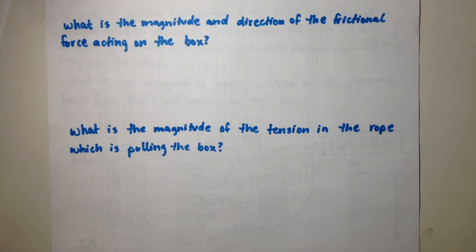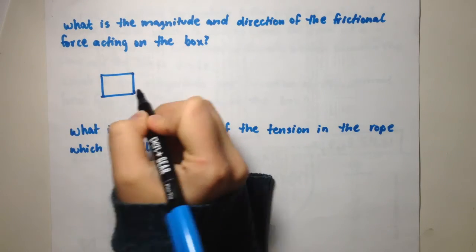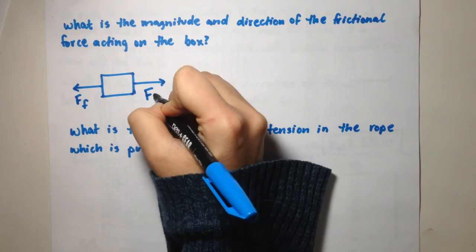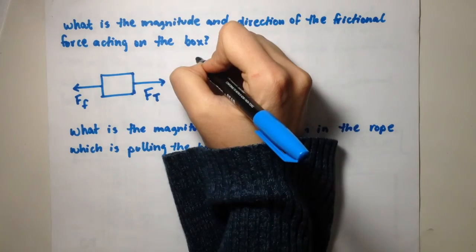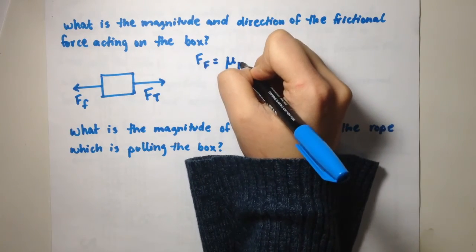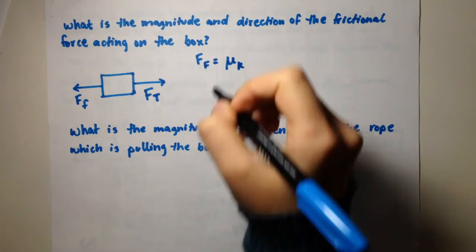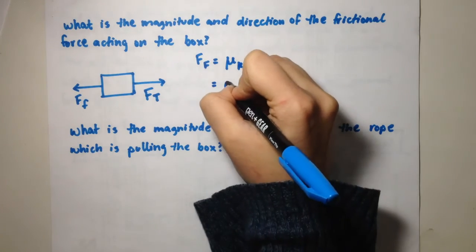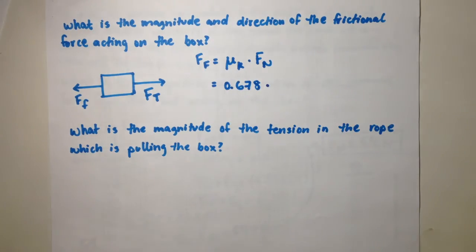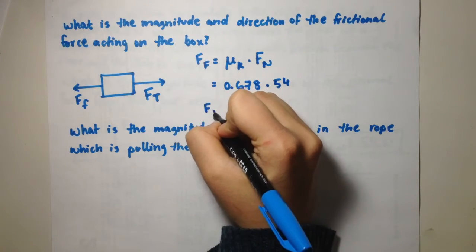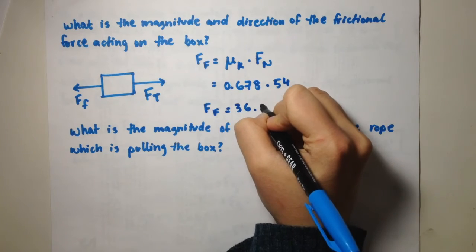The next part of the question asks for the magnitude and direction of the frictional force acting on the box. The frictional force is to the left — it's opposite the tension in the rope. The formula for force of friction is the coefficient of kinetic friction times the normal force. The coefficient of kinetic friction is 0.678, and the normal force we found is 54 newtons. Multiplying these two gives us a force of friction equal to 36.61 newtons.